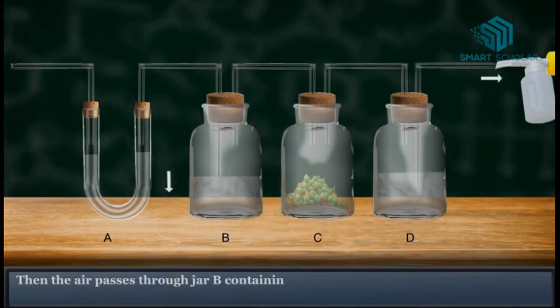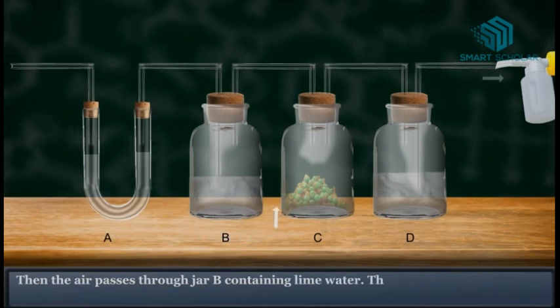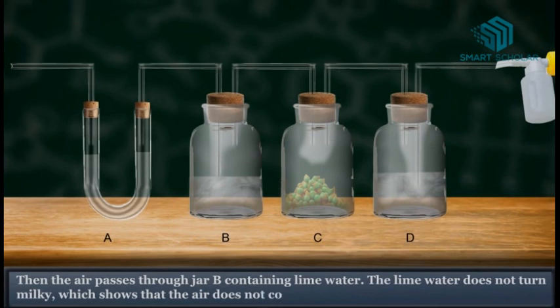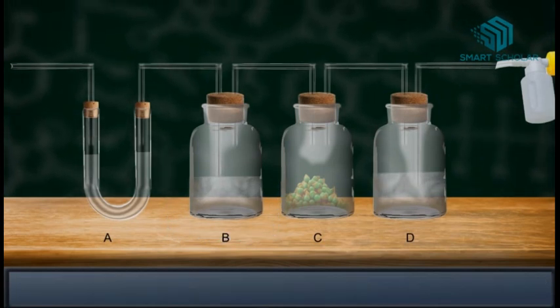Then the air passes through jar B containing lime water. This lime water does not turn milky, which shows that the air does not contain carbon dioxide.